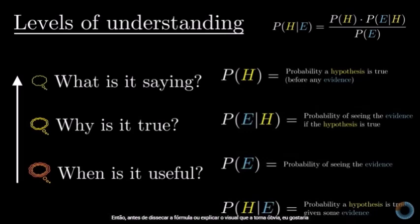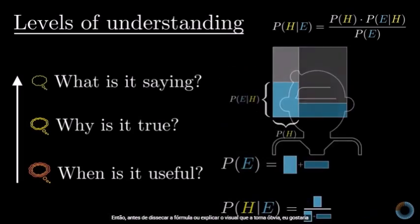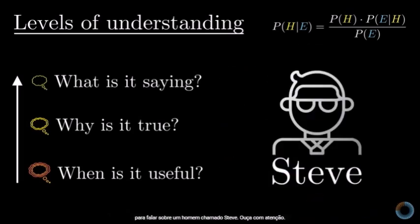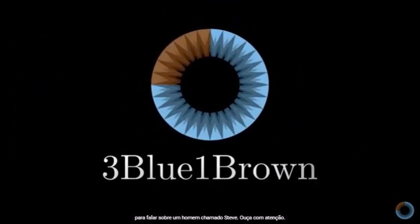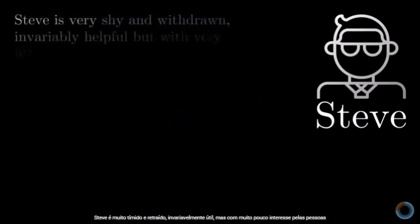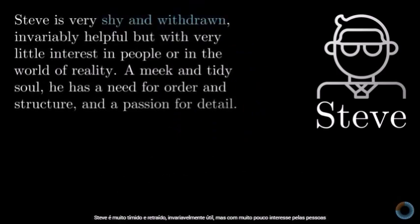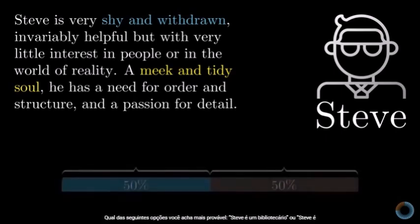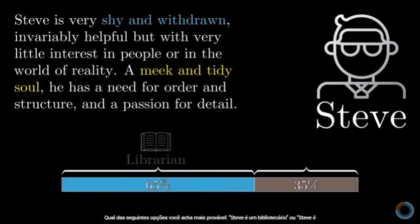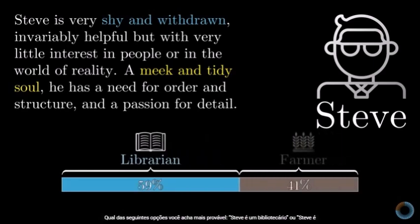Before dissecting the formula or explaining the visual that makes it obvious, I'd like to tell you about a man named Steve. Steve is very shy and withdrawn, invariably helpful, but with very little interest in people or the world of reality. A meek and tidy soul, he has a need for order and structure, and a passion for detail. Which of the following do you find more likely: Steve is a librarian, or Steve is a farmer?